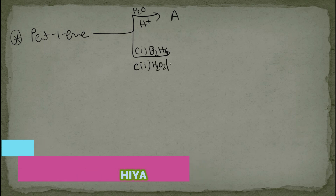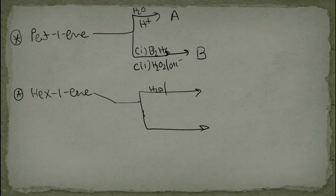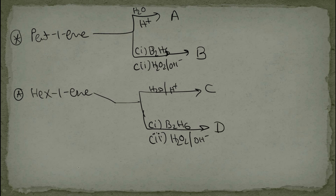Reaction A: pent-1-yne with B2H6 then H2O2/OH-. Reaction B: pent-1-yne with H2O/H+. Reaction C: hex-1-yne with H2O/H+. Reaction D: hex-1-yne with B2H6 then H2O2/OH-. Write the IUPAC and common names of products A, B, C, and D in the comment section.